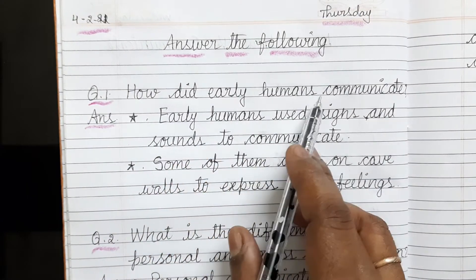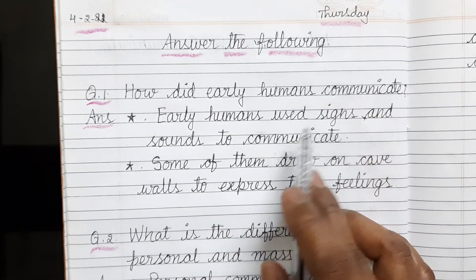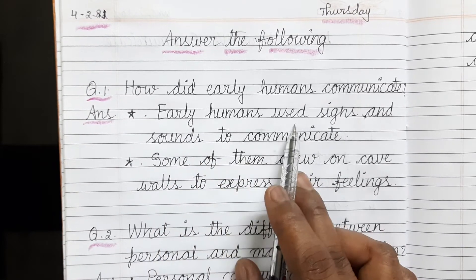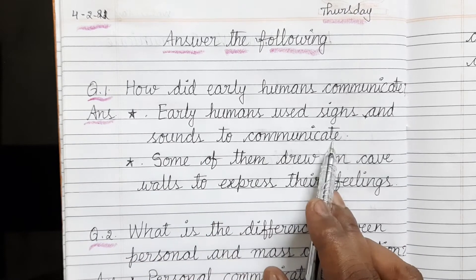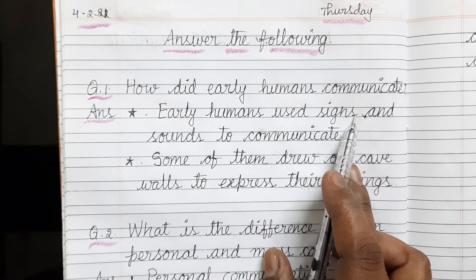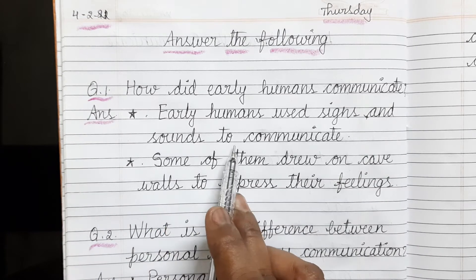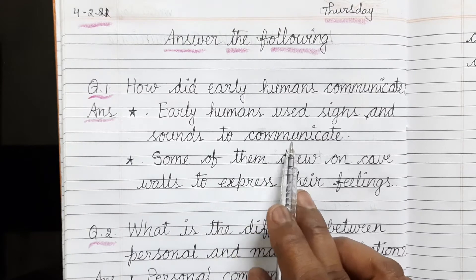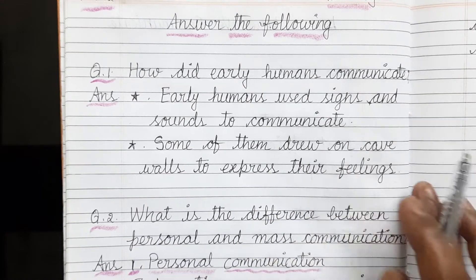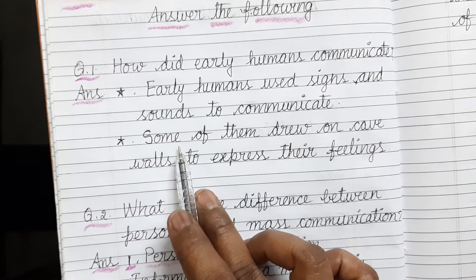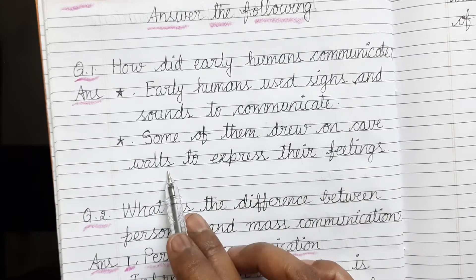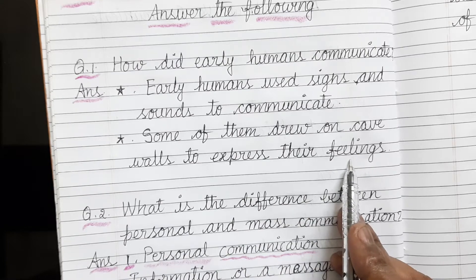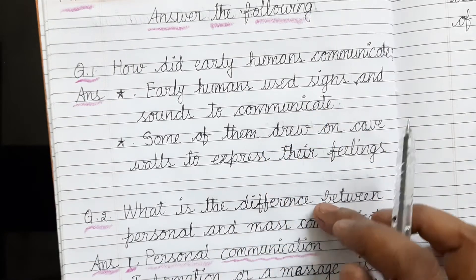First question: How did early humans communicate? Through signs and sounds. Early humans used signs and sounds to communicate. Signs — S-I-G-N-S — and sounds — S-O-U-N-D-S — to communicate. Everybody memorize the spelling: communicate — C-O-M-M-U-N-I-C-A-T-E. Second point: some of them drew on cave walls to express — E-X-P-R-E-S-S — their feelings. After this answer, coming to the second question.